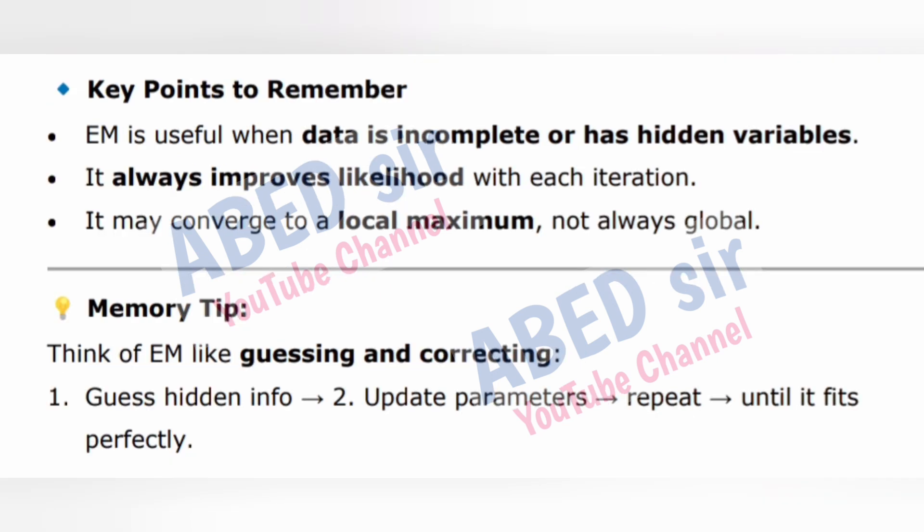Key points to remember: EM is useful when data is incomplete or has hidden variables. It always improves likelihood with each iteration. It may converge to a local maximum, not always global. Memory tip: Think of EM like guessing and correcting — guess hidden info, update parameters, repeat until it fits perfectly.